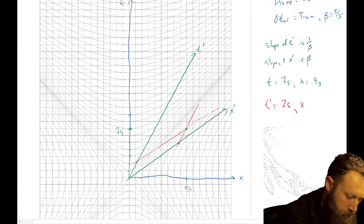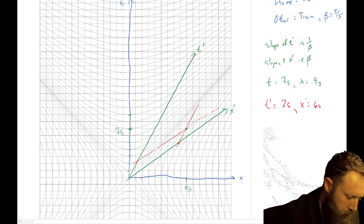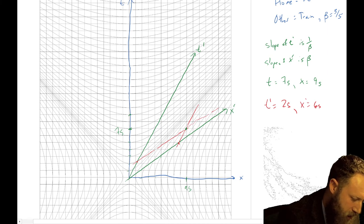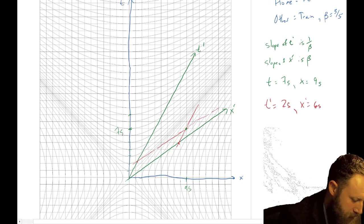So this point is t seven seconds, x nine seconds, and it's also the point t-prime two seconds and x-prime six seconds.